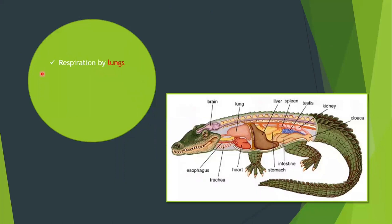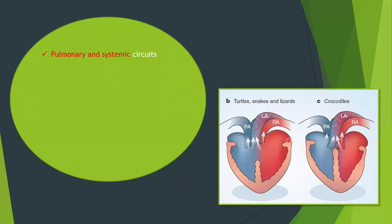Reptiles respire through lungs and have no gills. They also use the cloaca, pharynx, and skin for gas exchange in addition to their lungs.